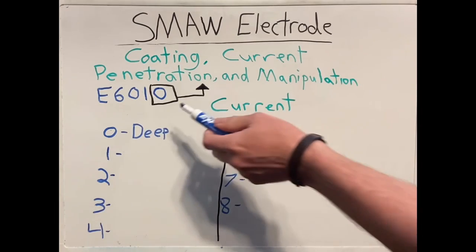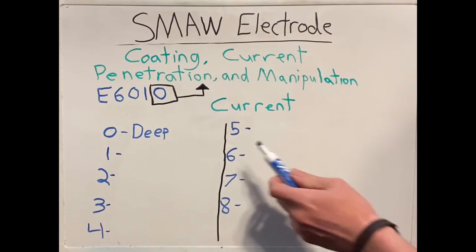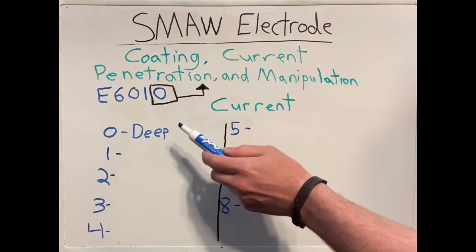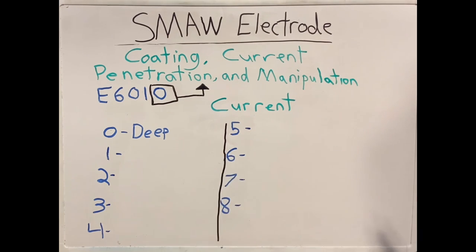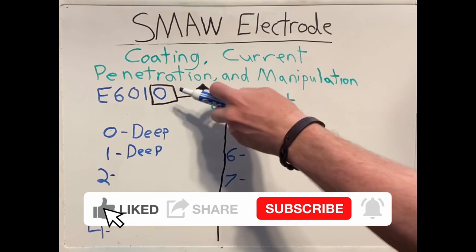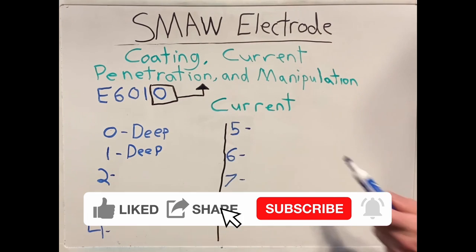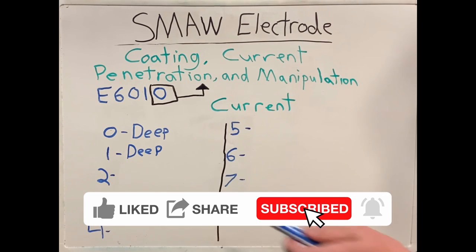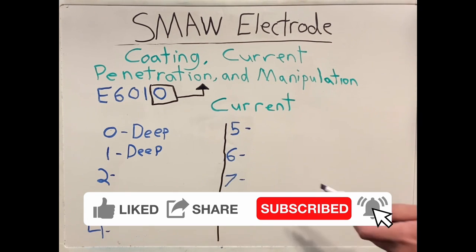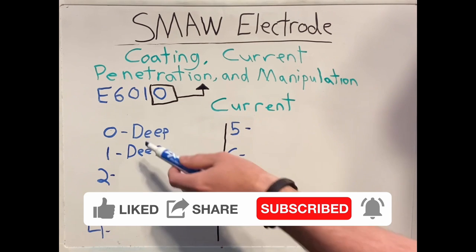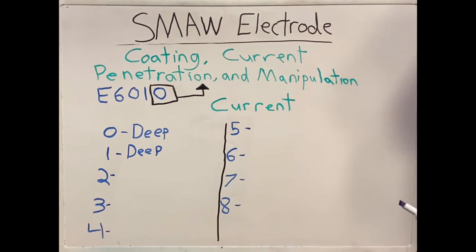If our number ends with zero, such as E6010, the penetration will be deep penetration. If our last number is a one, such as E6011, the penetration will also be deep. These are the only two numbers that will have deep penetration as part of the rod.